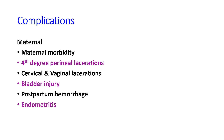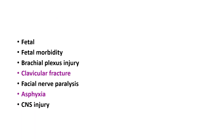Complications of shoulder dystocia are divided into maternal and fetal. Maternal complications include perineal lacerations, cervical and vaginal lacerations, bladder injury, postpartum hemorrhage, and endometritis — the latter from repeated vaginal examinations and insertion of the hand for various maneuvers. Postpartum hemorrhage results from prolonged labor causing uterine inertia, while lacerations occur from manually extracting the shoulder.